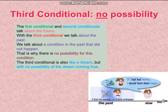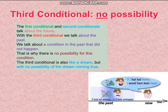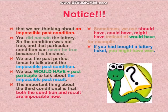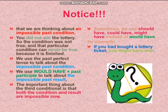Then, let's shift to the third conditional. The most important thing here is to remember that there is no possibility. The first and second conditionals talk about the future. With the third conditional, we talk about the past — a condition in the past that did not happen. That is why there is no possibility for this condition. The third conditional is also like a dream, but with no possibility of the dream coming true. For example: if I had had money, I would have been happy. I had no money — I was unhappy in the past. Notice that we are thinking about an impossible past condition. You did not win the lottery, so the condition was not true, and the particular condition can never be true because it is finished. We use the past perfect tense to talk about the impossible past condition, and would have plus past participle to talk about the impossible past result. The important thing about the third conditional is that both the condition and the result are impossible now.